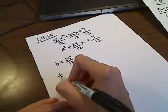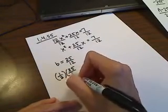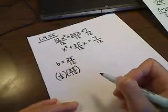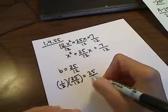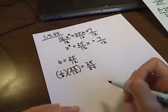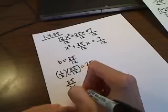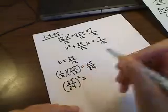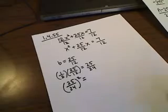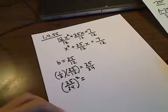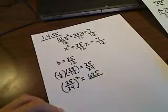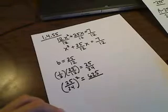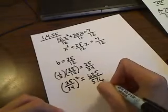And then you take a half of b. So half of 25 over 12. And you get 25 over 24. And then you square that. So 25 over 24 squared is going to give you, let me get my calculator out. 25 squared is 625. And 24 squared is 576.